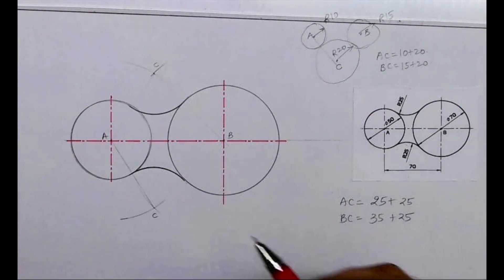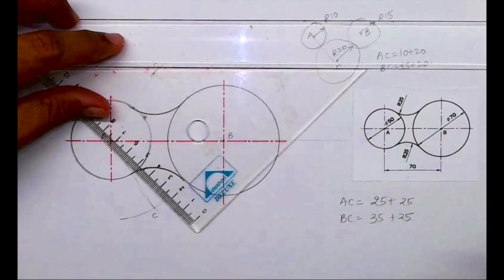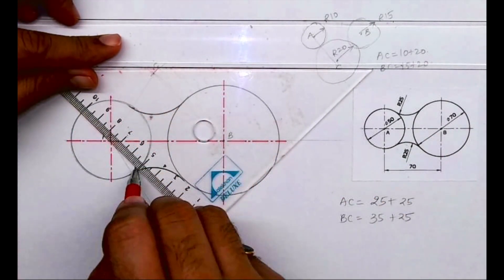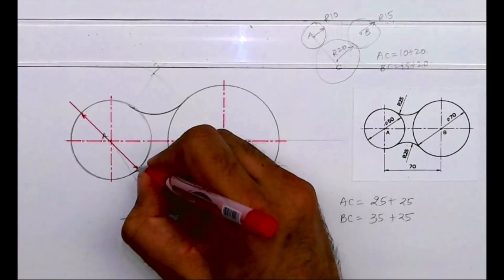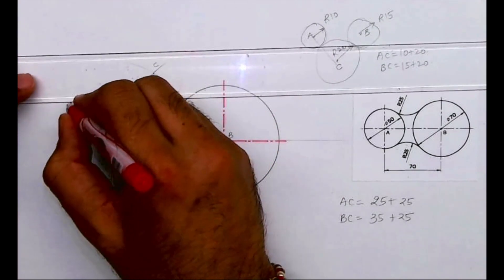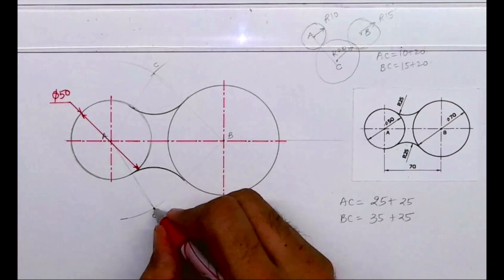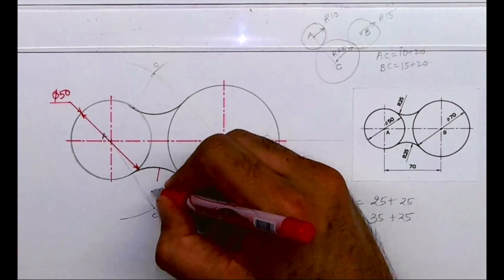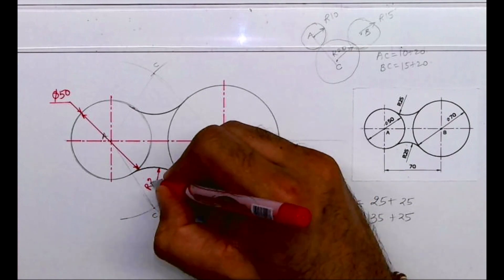I hope everyone understood how to draw this external radius. Remember: in external radius, we need to add the radii to find the center distance. Now we'll do dimensioning.